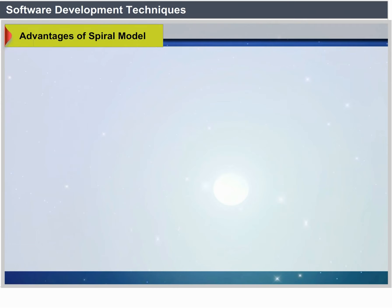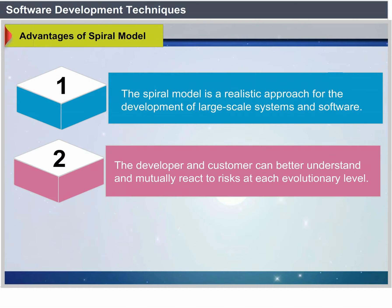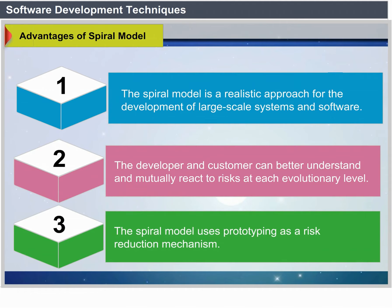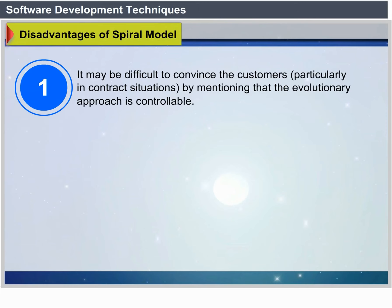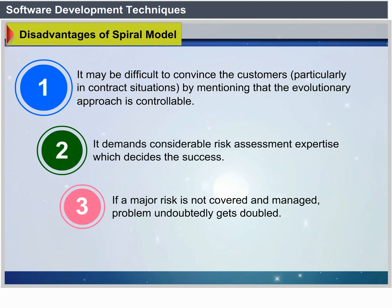Advantages of the Spiral Model: it is a realistic approach to the development of large-scale systems; the developer and customer better understand and react to risks at each evolutionary level; and it uses prototyping as a risk reduction mechanism. Drawbacks: it may be difficult to convince customers that the evolutionary approach is controllable; it demands considerable risk assessment expertise; and if a major risk is not uncovered and managed, problems will undoubtedly occur.